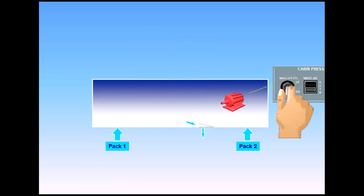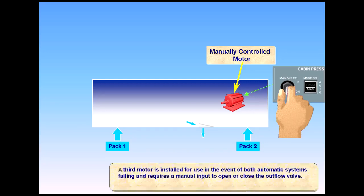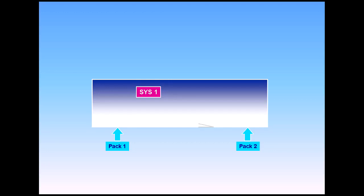A third motor is installed for use in the event of both automatic systems failing, and requires a manual input to open or close the outflow valve. To avoid excessive cabin differential pressure, safety valves are installed.